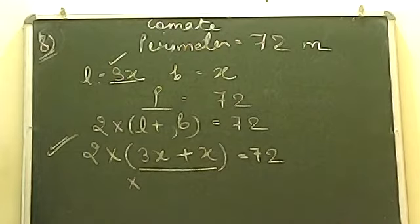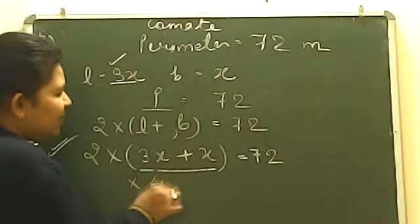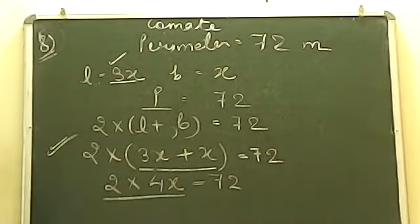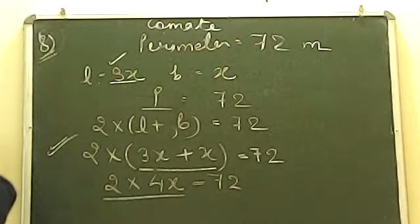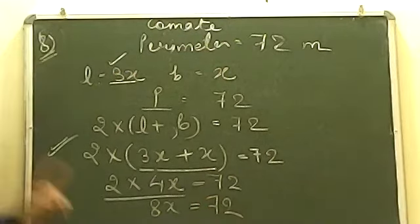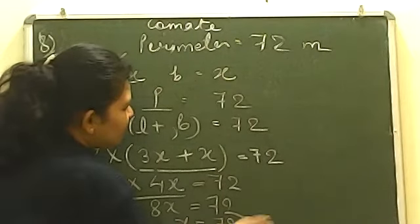2 into 4X: what will come? 2 into 4 gives you 8, so 8X equals 72. Therefore X equals 72 divided by 8, which gives you 9. So X, which was breadth, equals 9 meters.